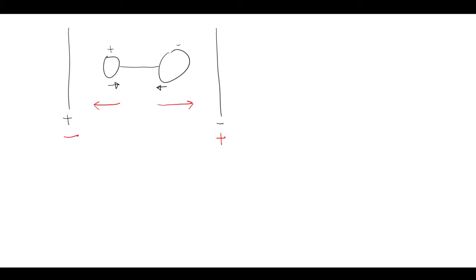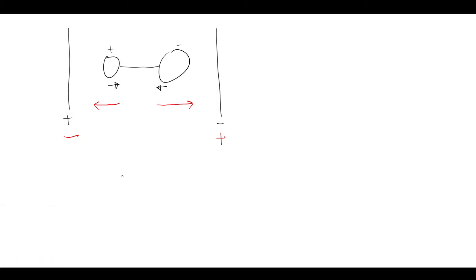In this picture, the molecule must have a positive and negative end - a dipole - to respond to the field. Indeed, only polar molecules can undergo strictly vibrational transitions from light. That's a really important point, so let's repeat it and write it down.